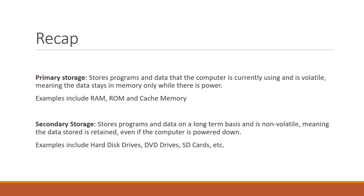We will start with a quick recap. Last lesson, we looked at primary storage, which is used to store programs and data that the computer is currently using. This type of storage is volatile, meaning it loses its data when the power is turned off. Examples of primary storage include RAM, ROM, and cache memory.